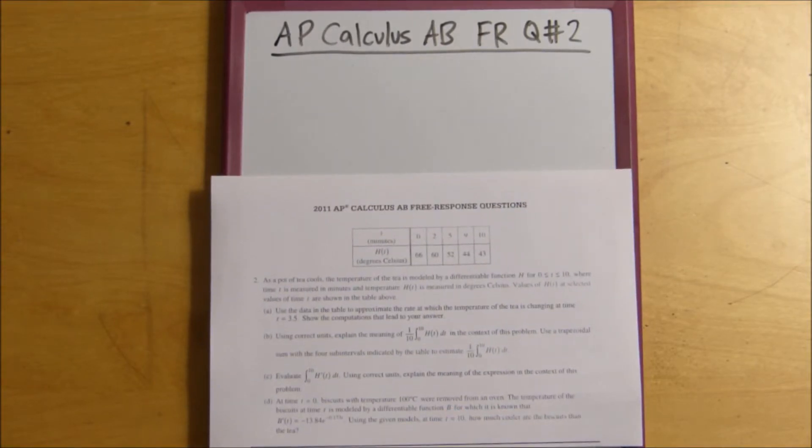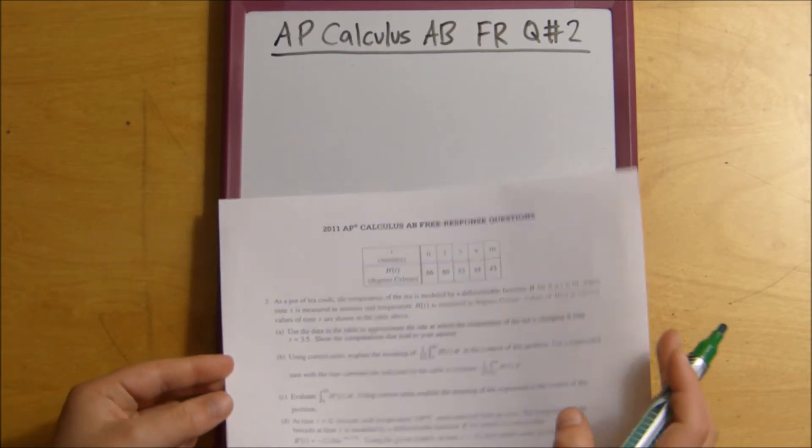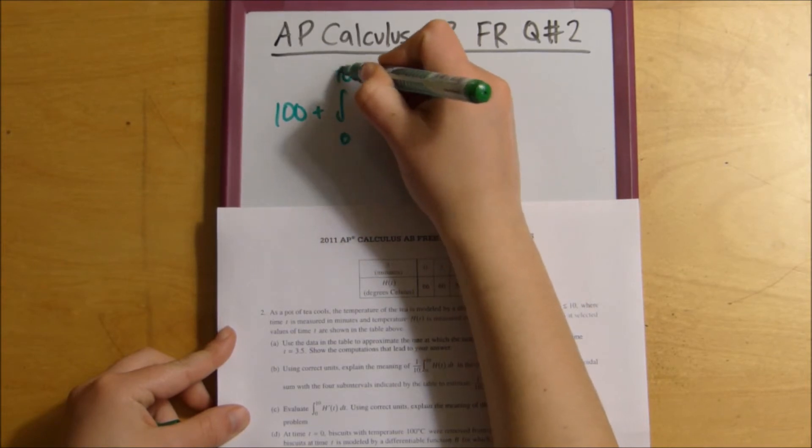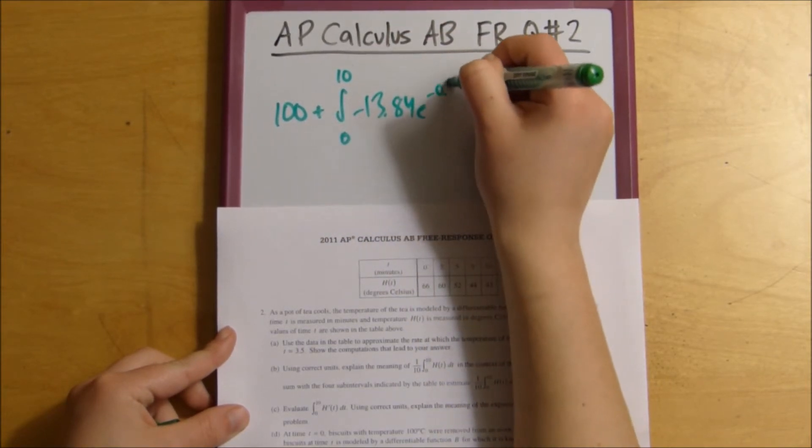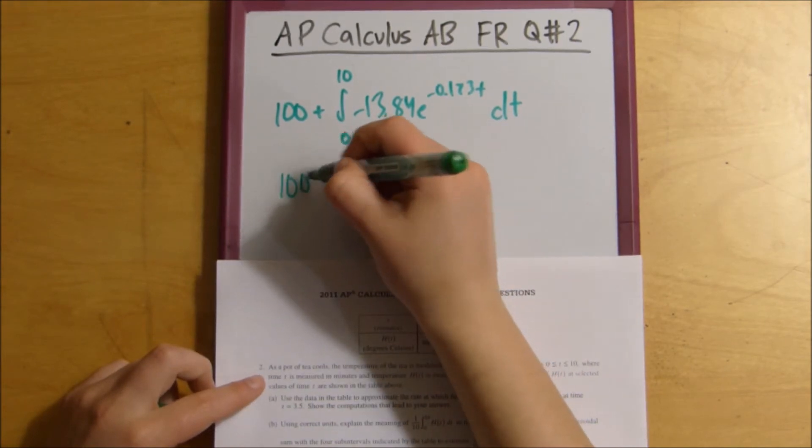So, this next problem has these biscuits that are at 100 degrees Celsius, and we were given this rate at which they cooled down. So, what we're going to do is, we're going to find the integral of that to find b of 10. And then, we're going to add 100 to that, and that is going to equal b of 10. And we're going to compare that to the temperature of the biscuits at t equals 10. So, that explanation was a little confusing, let me just use some numbers. 100 plus the integral from 0 to 10 of negative 13.84 e to the negative 0.73 t dt.